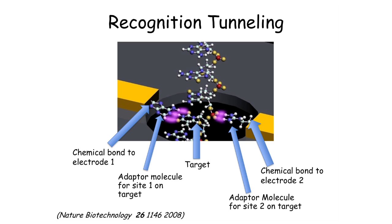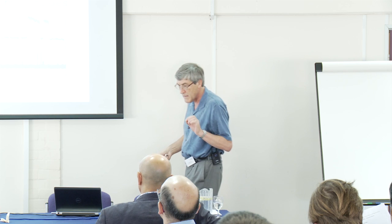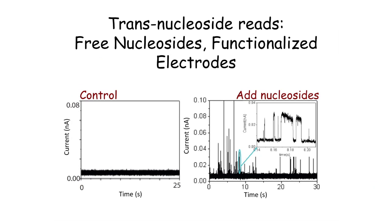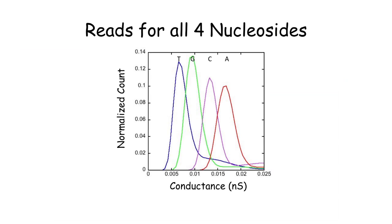This is called recognition tunneling, because the tunneling current has the ability to recognize the particular nucleoside. It has the potential to be a much more rapid means of DNA sequencing. When you drag DNA through and measure typical results, you get bursts of current with complicated spikes — each particular nucleoside has a different pattern of noise, a different pattern of spikes and jiggles. Averaging these out yields different conductances for the four different nucleosides, and you can even distinguish between methylated and non-methylated nucleosides.